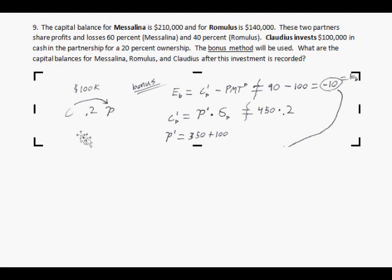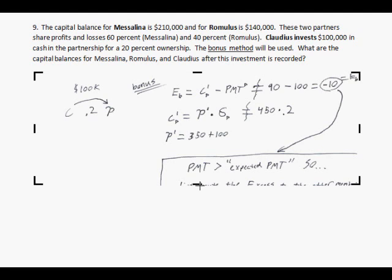That means you have to distribute that excess bonus to the other members. He doesn't get the bonus, sadly. This C person, this newcomer, they don't get that bonus. But the other members do, and they will appreciate it. So, since payment is greater than the expected payment, distribute the excess to the other members.